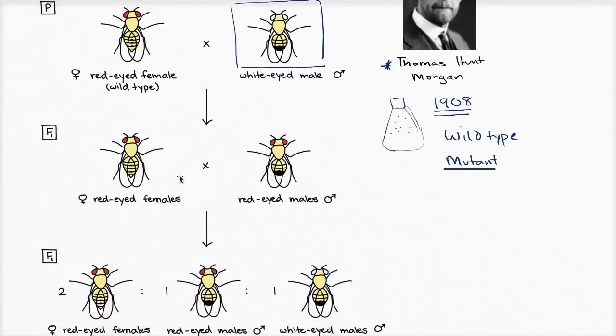Just off of that first generation, it wasn't clear that anything interesting was going on. But then, when he crossed these to each other, and some of you are thinking, aren't they all brothers and sisters being crossed to each other? Well, yeah, they were probably half brothers and sisters if they came from different mothers, but some of them could have been brothers and sisters. That's what people are talking about when they're crossing the F1 generation.